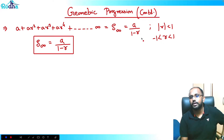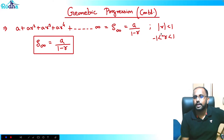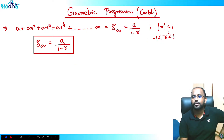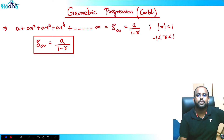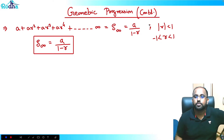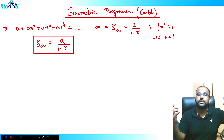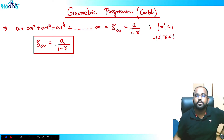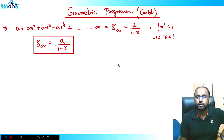This formula is applicable only when the modulus of r is less than 1. This formula actually comes from limits in calculus, but we don't need to go into calculus and limits — we just need to use this formula for the sum of infinite terms of GP.